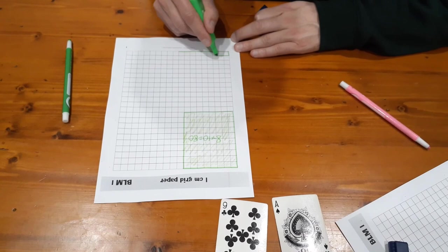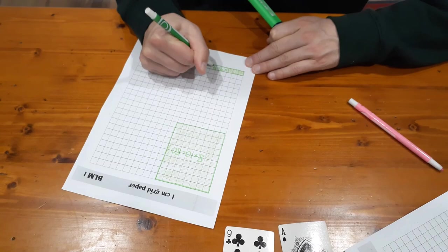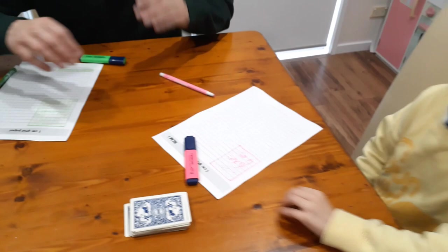One and nine, so one times nine. I've got a bit of a decision to make because I've got to work out where to put this one group of nine. I am going to put my one times nine down here. One, two, three, four, five, six, seven, eight, nine.